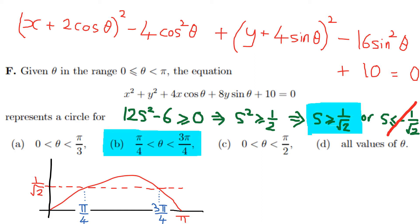I have a subtle disagreement with Oxford's approach here. They've used a strict inequality — θ strictly between the two values — whereas I think it should be less than or equal to, because if the radius shrinks to 0 the circle becomes a point, technically still a degenerate circle. So I think the inequality should not be strict.